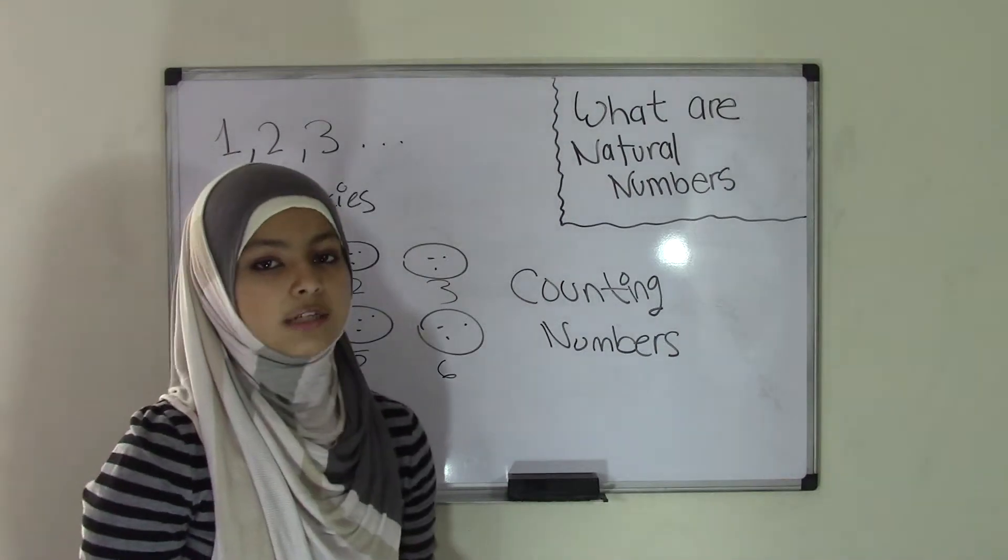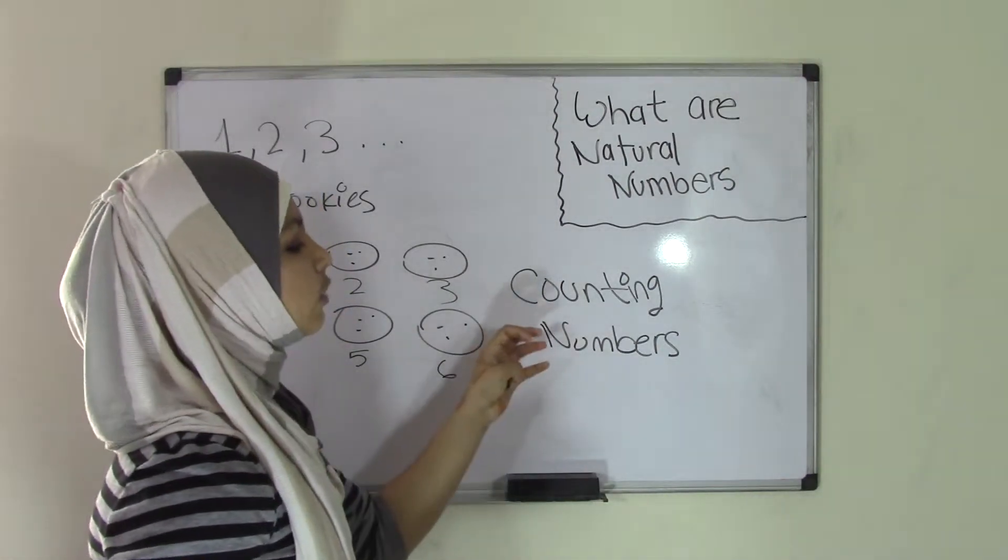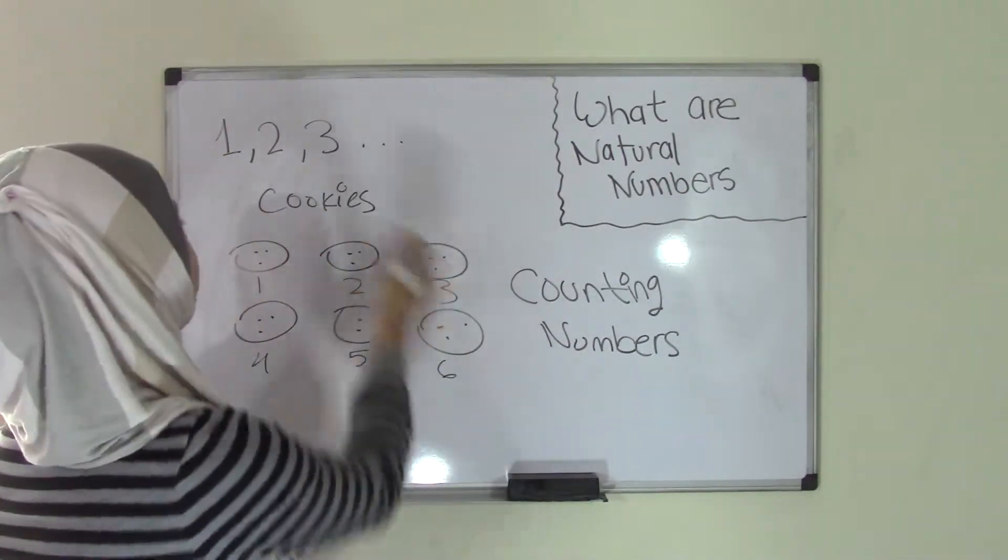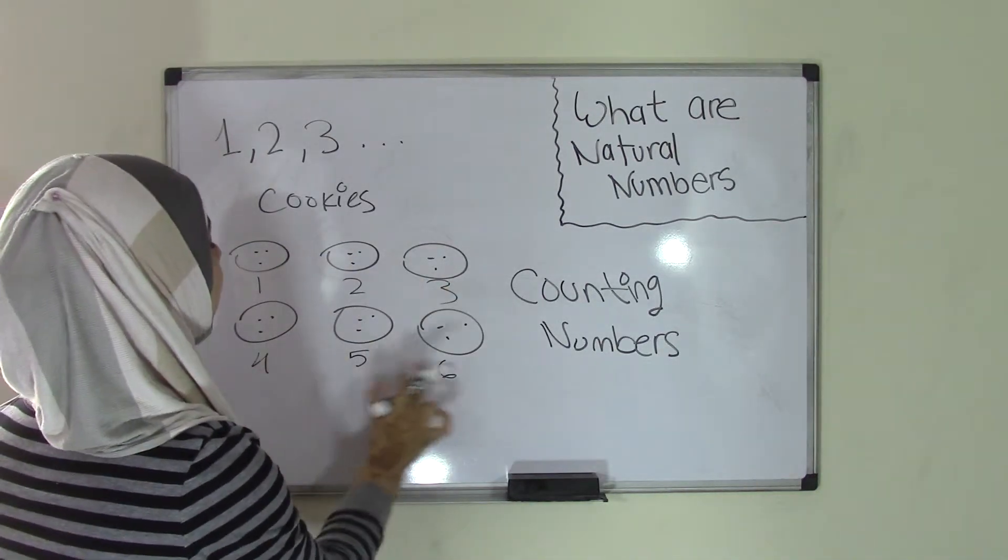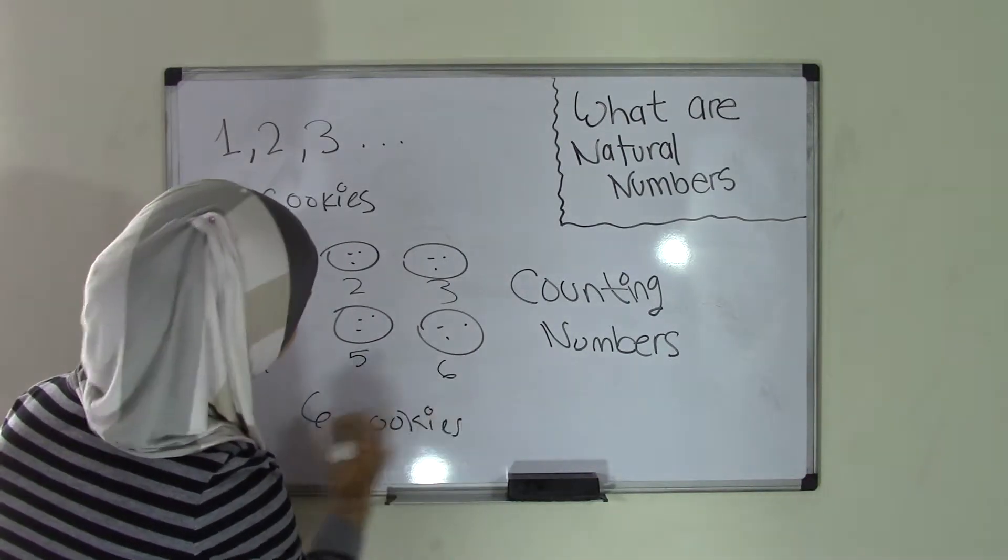How do I identify that these are natural numbers? Because remember, natural numbers can be viewed as counting numbers, and when we're counting, we start from 1, 2, 3, and if we were counting these, we'd go 1, 2, 3, 4, 5, 6 cookies. So we know that this is a natural number.